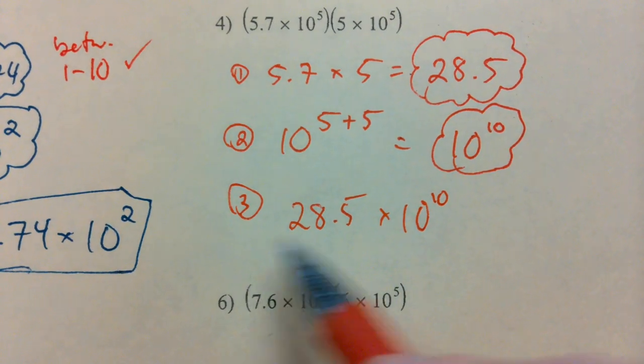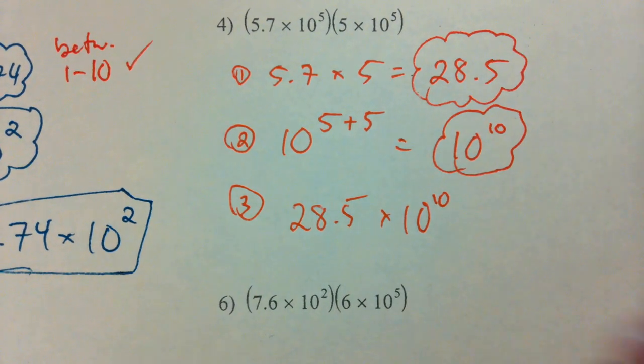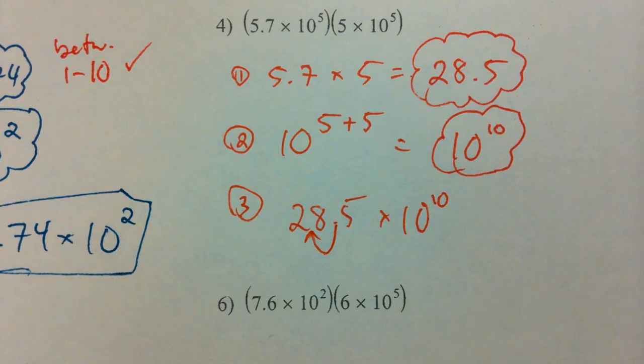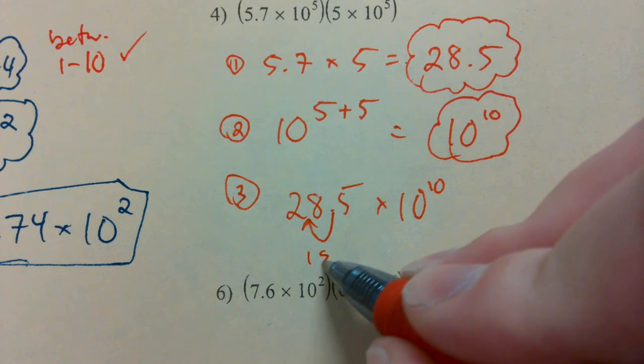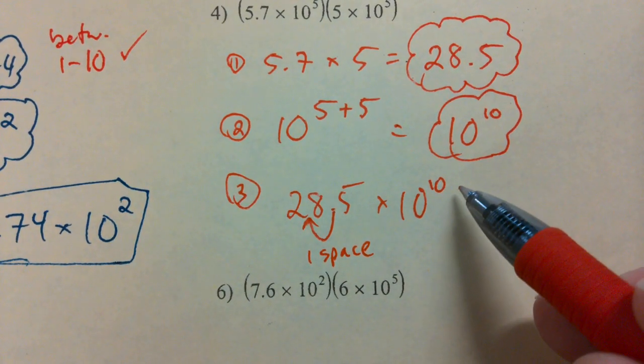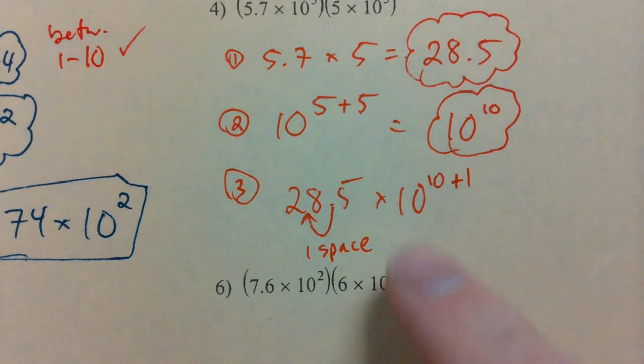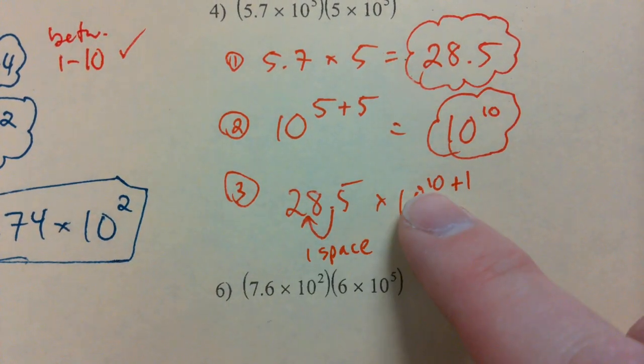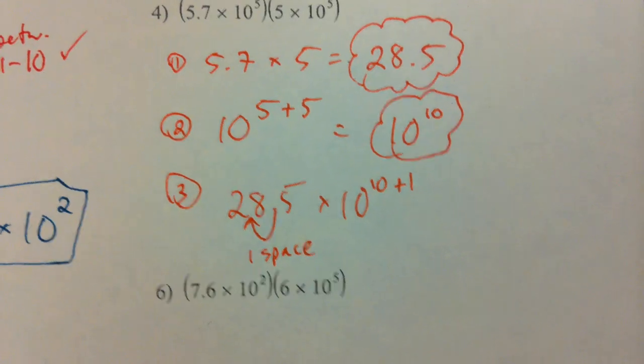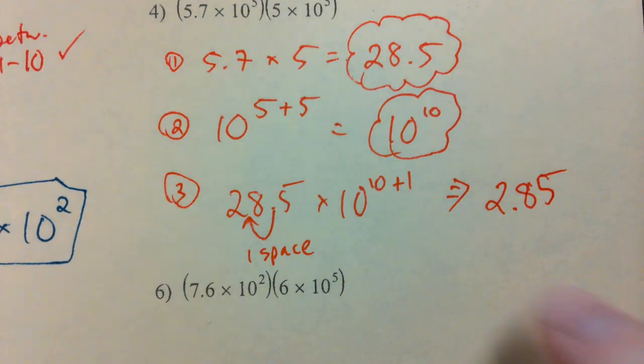Okay. 28.5 in front. And that doesn't look right, obviously, right? So, we're going to do what with this decimal here? We're going to move it. One space over. So, if we only move it one space, what do we add to our power? One. Plus one. One space over. Plus one.